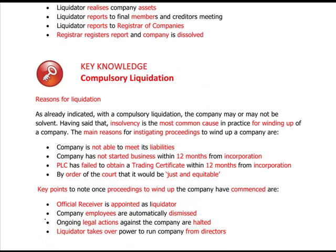In a compulsory liquidation, the company may or may not be solvent, though insolvency is the most common cause in practice. Reasons include: the company is not able to meet its liabilities; the company has not started business within 12 months from incorporation; or a PLC has failed to obtain a trading certificate within 12 months from incorporation.